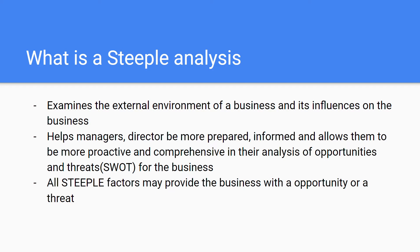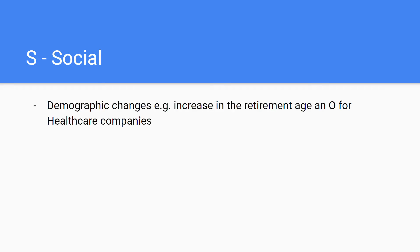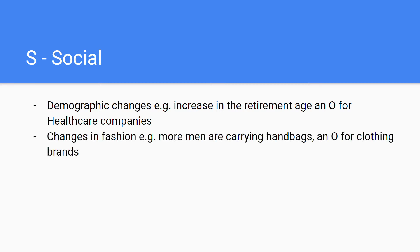The first letter is Social. Social refers to demographic changes — for example, an increase in the retirement age might be an opportunity for healthcare companies. Social also includes changes in fashion of a population; for example, men carrying more handbags nowadays — that's just an example.